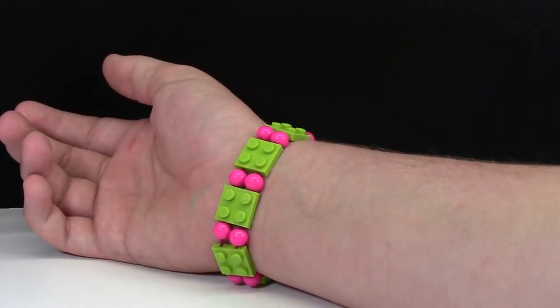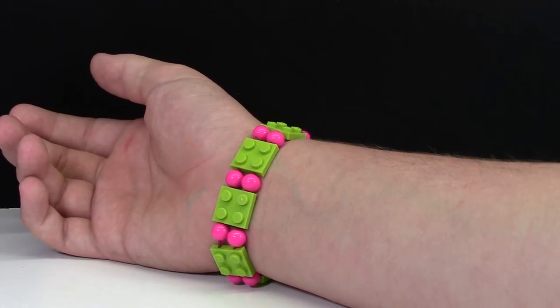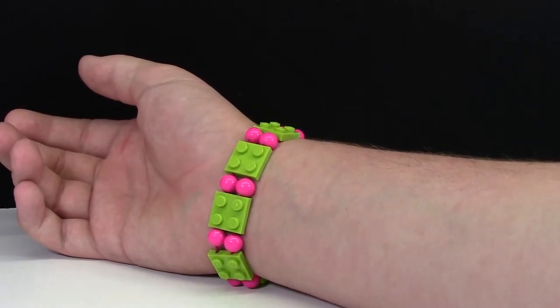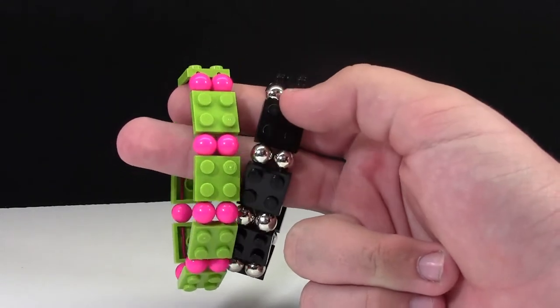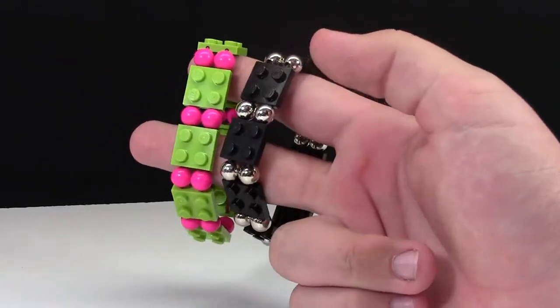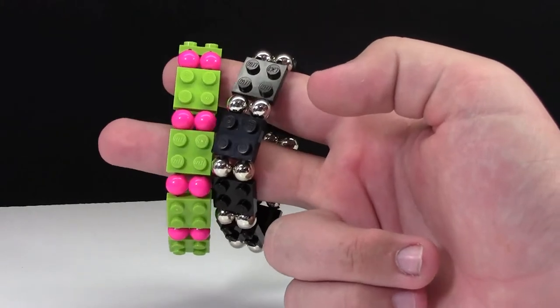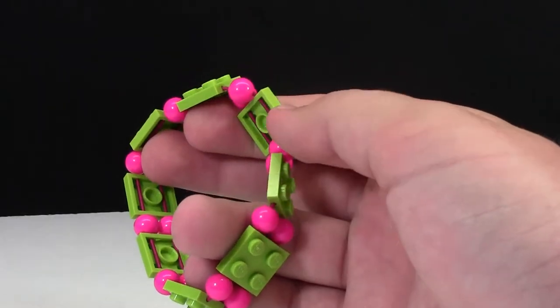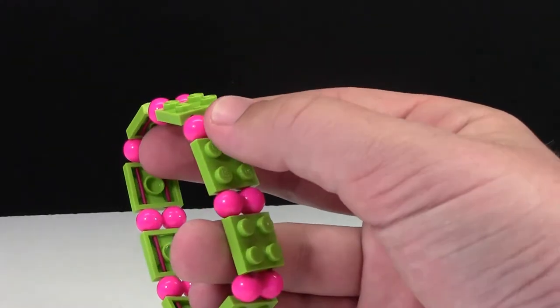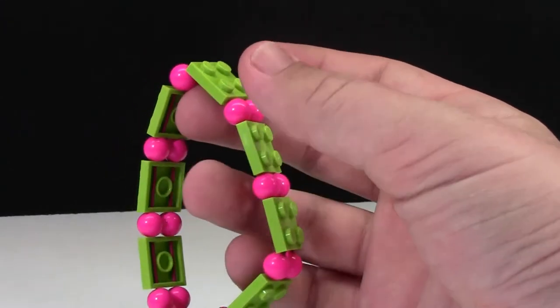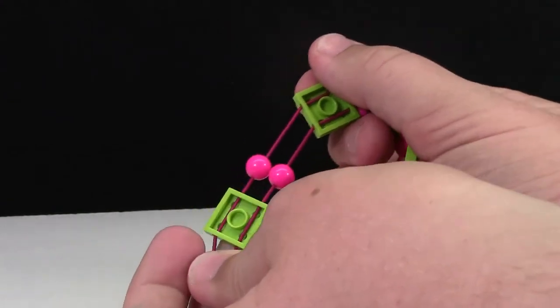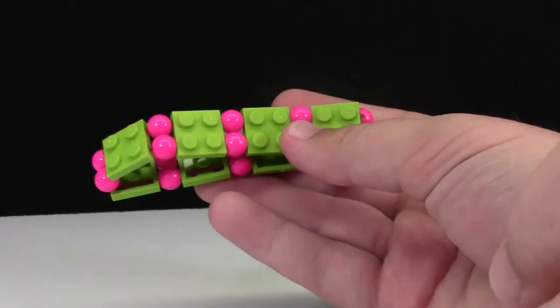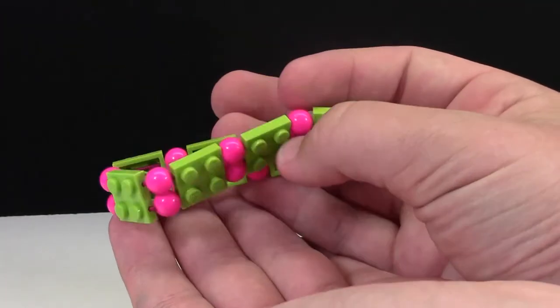This next bracelet was one that my sister absolutely loved. This one is lime green and pink. It uses the exact same material, it looks the exact same as this black and silver one, but it's just more funky because of the colors. My sister really loved the 2x2 lime green plates with the solid hot pink beads, that was her favorite part. And of course the string is another hot pink, so it just ties the bracelet together, making this her absolute favorite bracelet.